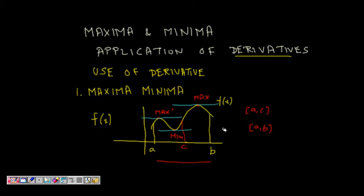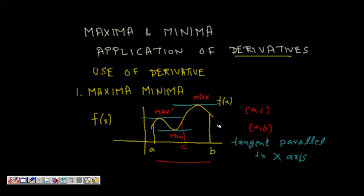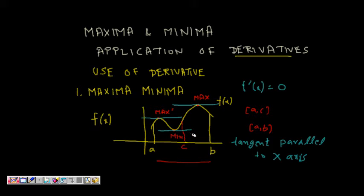All the blue tangent lines at these maxima and minima points are parallel to the x-axis. That is a very valid observation. At all these points — both maximum value points and minimum value points — the tangent is parallel to the x-axis. So what does this mean about f'(x) at these points? f'(x) is zero, because it's parallel to the x-axis.